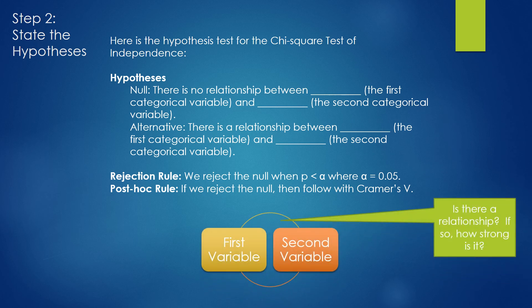All of this statistical talk is just a fancy way of asking, is there a relationship between two variables? If so, how strong is it? The Chi-Square Test of Independence will tell you whether there's a relationship. Cramer's V will tell you how strong that relationship is, assuming there is a relationship to measure.